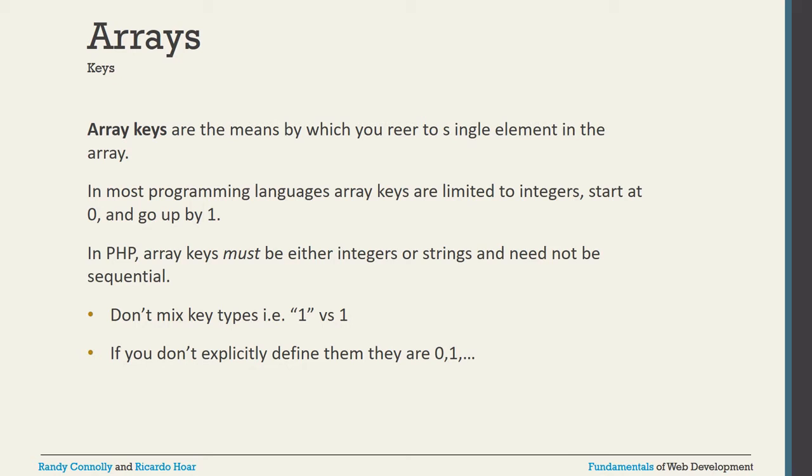Array keys: in most programming languages, keys are limited to integers starting from 0 going up sequentially. But in PHP, keys can be either integers or strings. They need not be sequential either. Don't mix key types, and if you do not explicitly define them, they default to 0, 1, and so on.